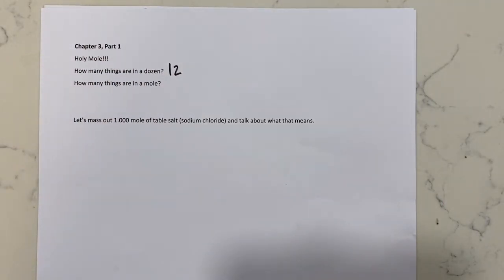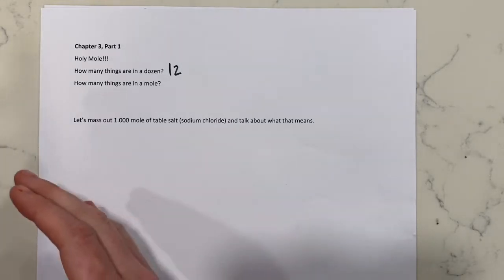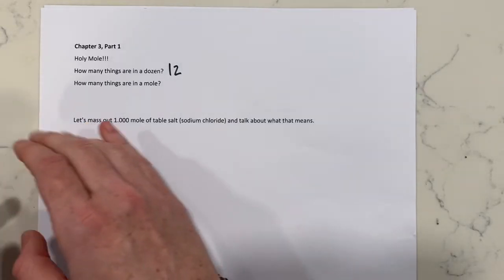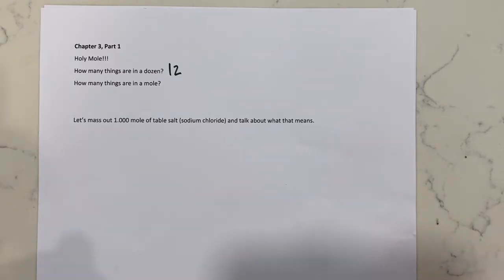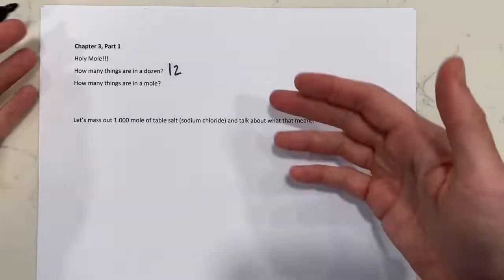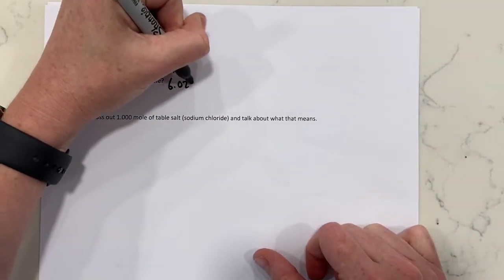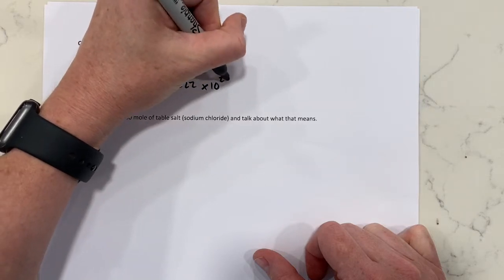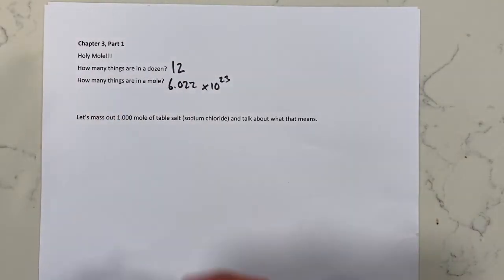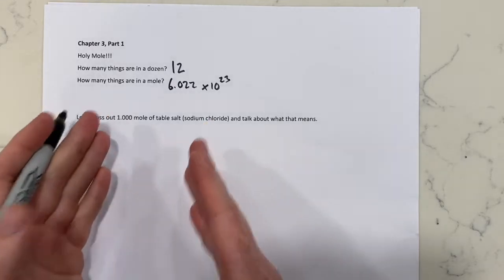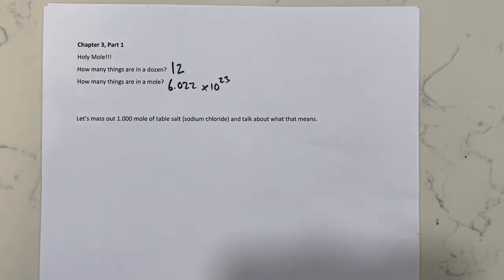By the exact same reasoning, a mole works — it's just a set number of things. If I say how many things are in a mole, instead of twelve in a dozen, there are 6.022 times 10 to the 23rd things in a mole. And that's what a mole is — just a set number.